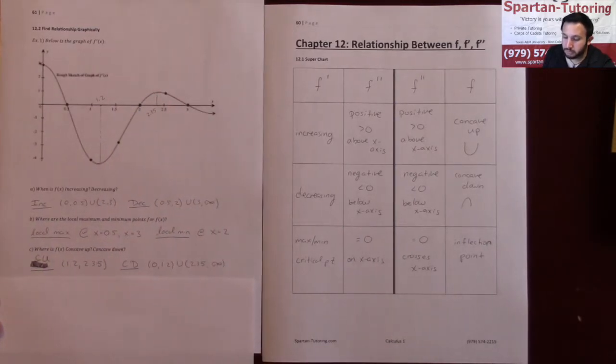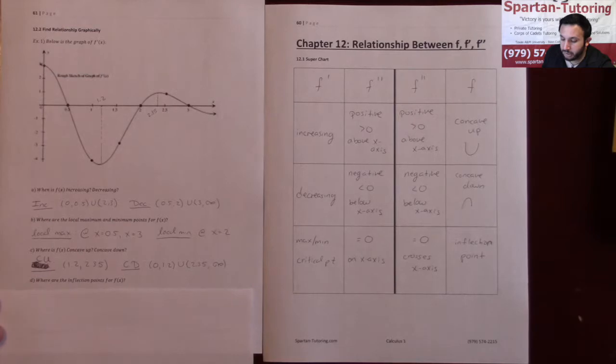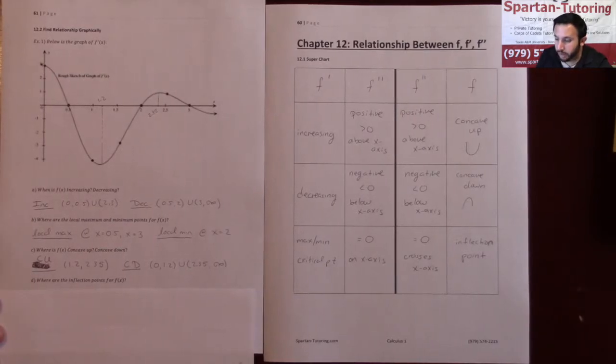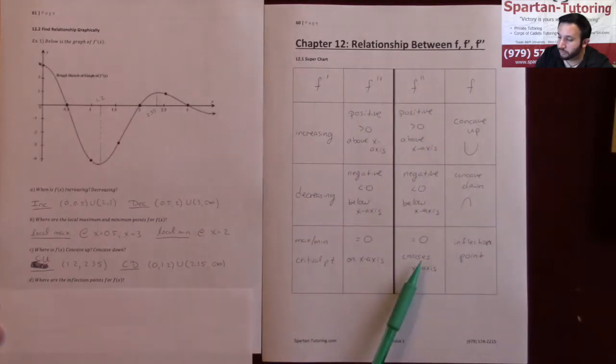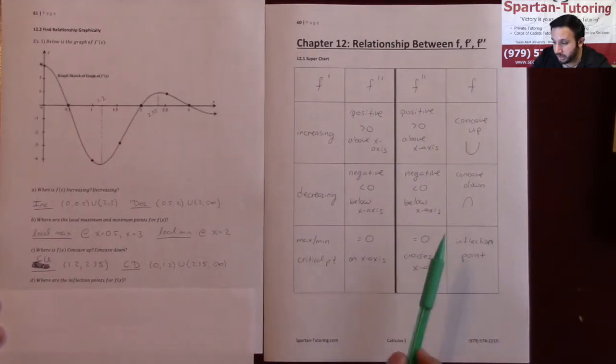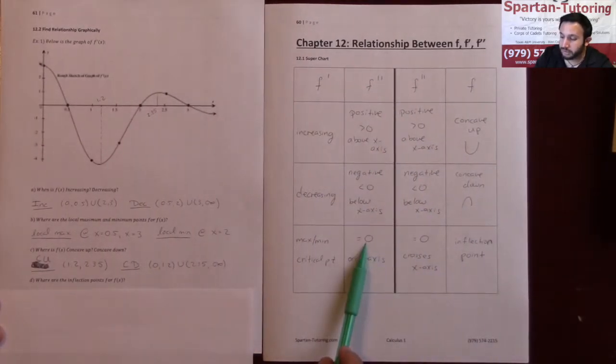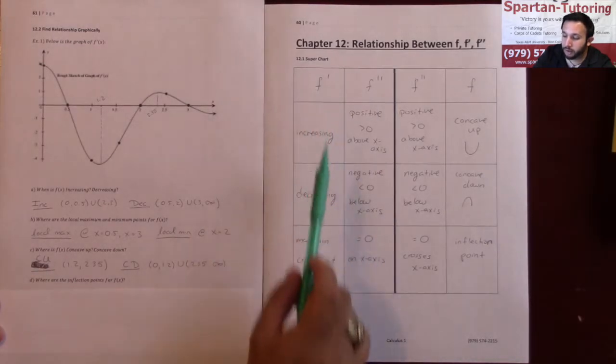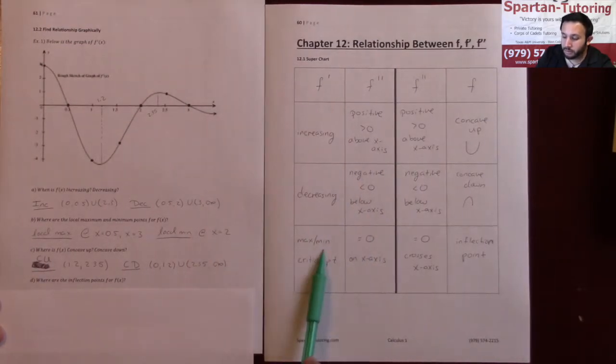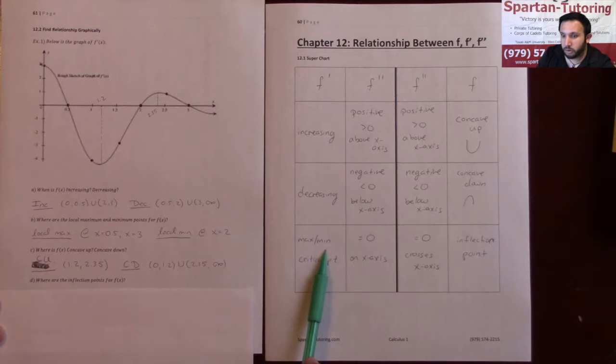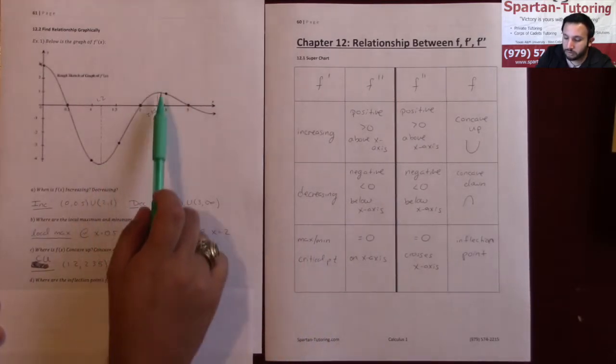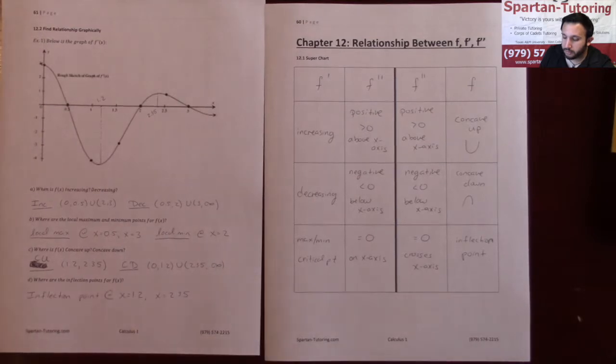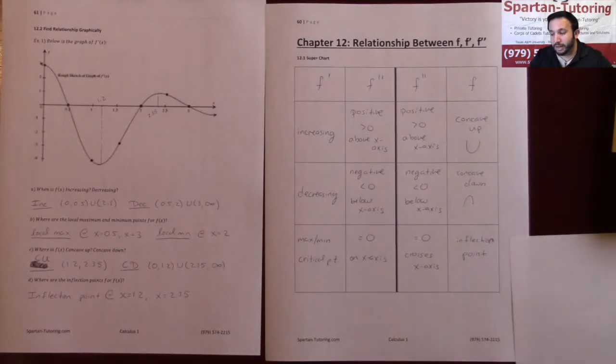Finally, for part D, where are the inflection points for f of x? F is going to have an inflection point when the second derivative crosses the x-axis or equals 0. The second derivative equals 0 whenever f prime has a max or a min. Therefore, your inflection points are here at 1.2 and 2.35.